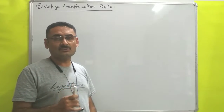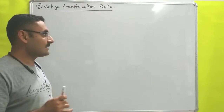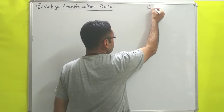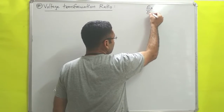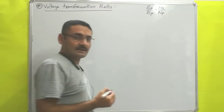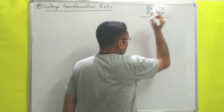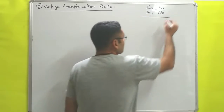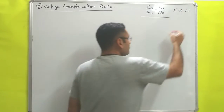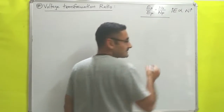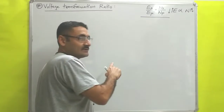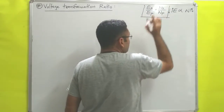Before understanding voltage transformation ratio, we will recall our previous video lectures. In one lecture where we discussed construction and working of a transformer, we derived the equation: EMF in secondary coil divided by EMF in primary coil equals number of turns in secondary coil divided by number of turns in primary coil. From this equation, we concluded that EMF is directly proportional to number of turns — increase turns and EMF increases; decrease turns and EMF decreases.